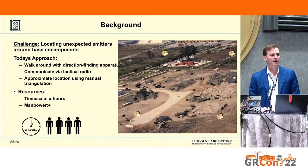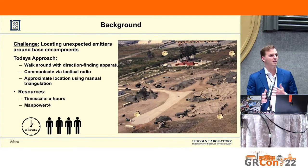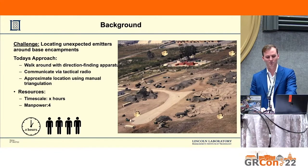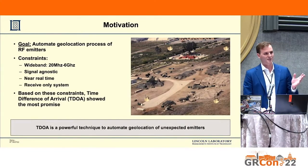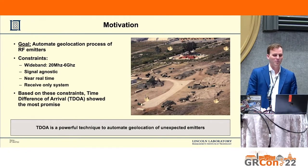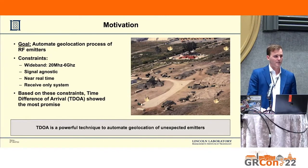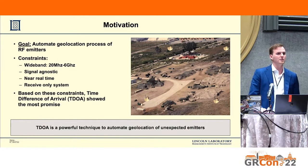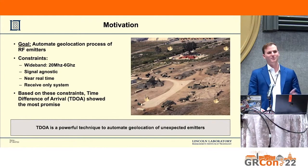A little bit of background. What we're trying to do here is basically locate unexpected emitters in a base encampment scenario. Currently it's kind of a long process where they wander around, so what we wanted to do is automate this process. Geolocation is not a new concept, but we had some interesting constraints: we wanted to be extremely wide band, remain signal agnostic, be near real-time — within a couple of seconds — and be a receive-only system so as not to pollute the EM spectrum. Based on these constraints we decided to pursue a time difference of arrival based technique.